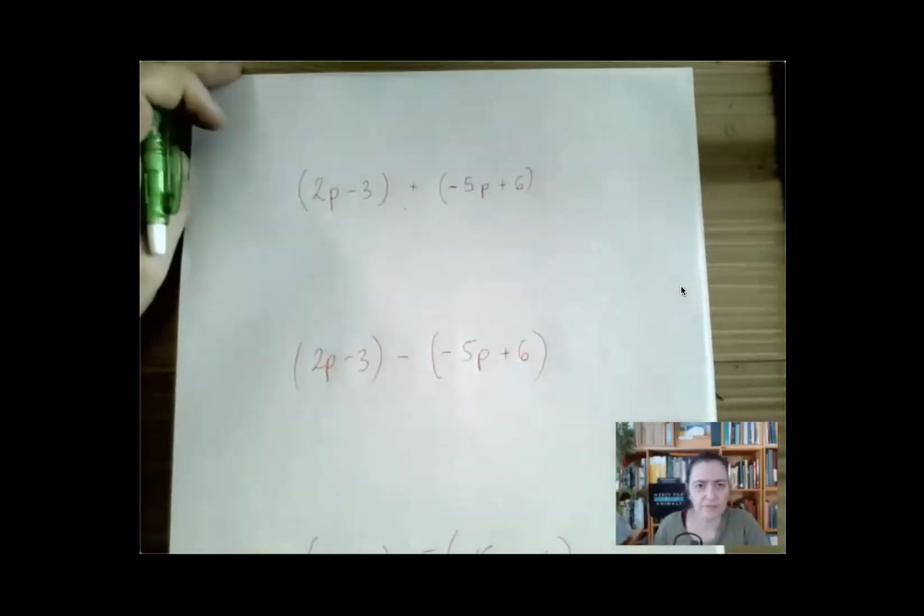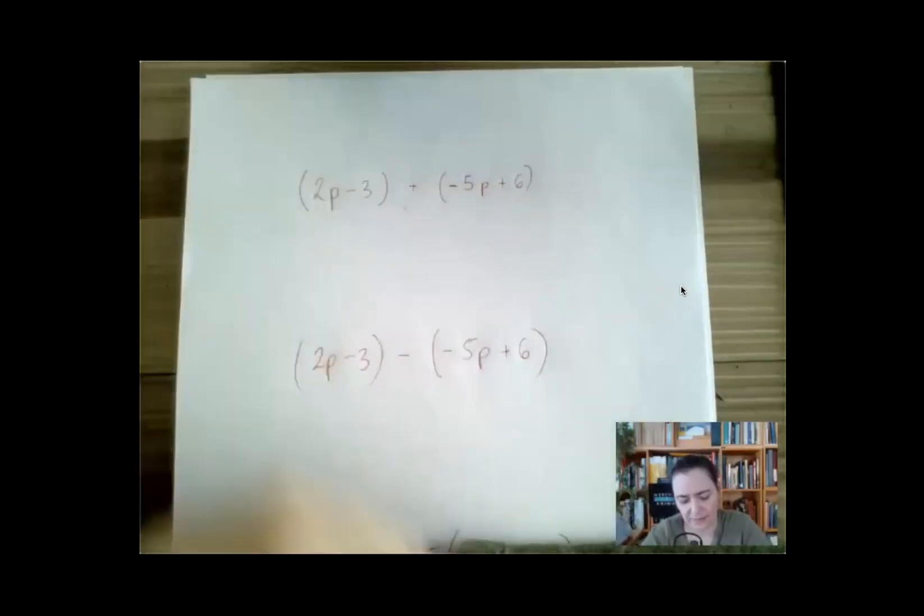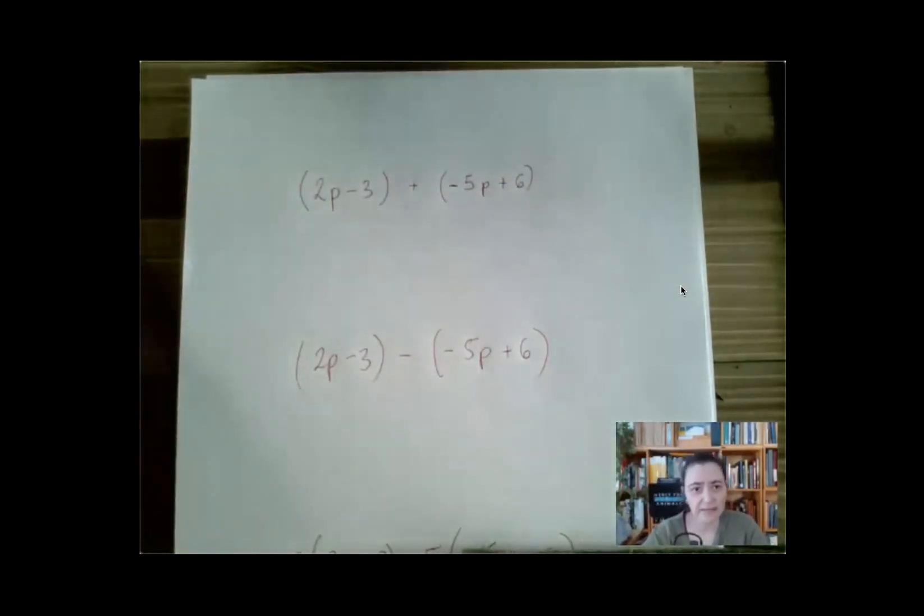In the first example, we have to add these two things. The parentheses are kind of just meaningless accessories here. They don't really play a role, we can just drop them. If they do anything, they suggest that we're adding two algebraic expressions and not just four different terms. But mentally, we just drop the parentheses and combine like terms.